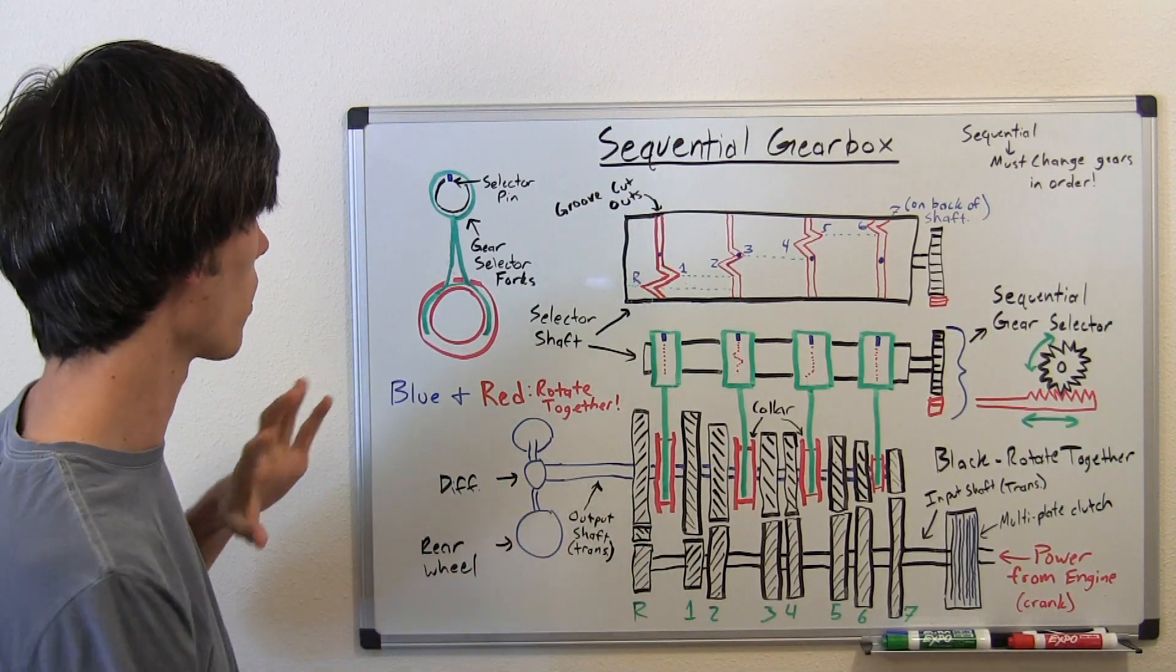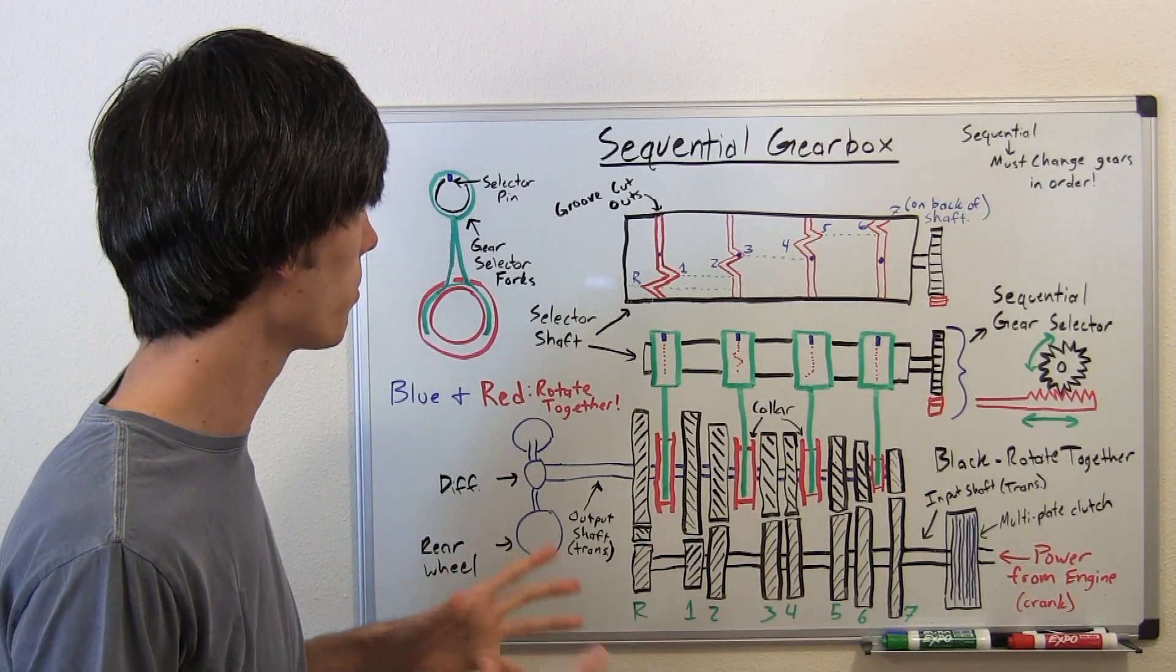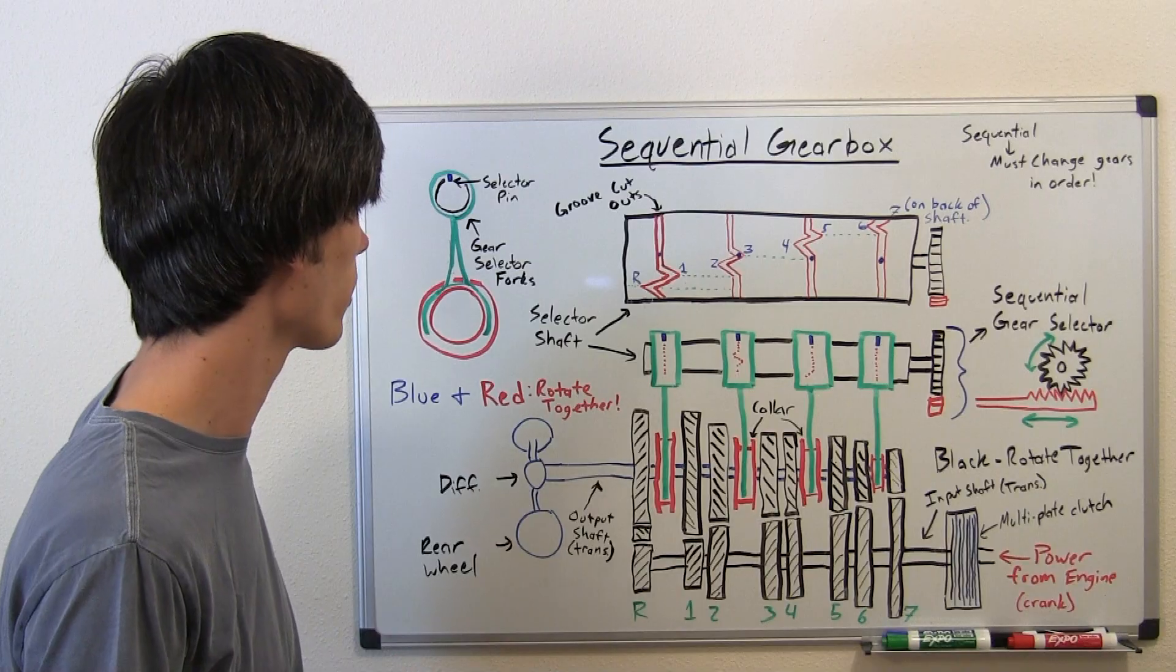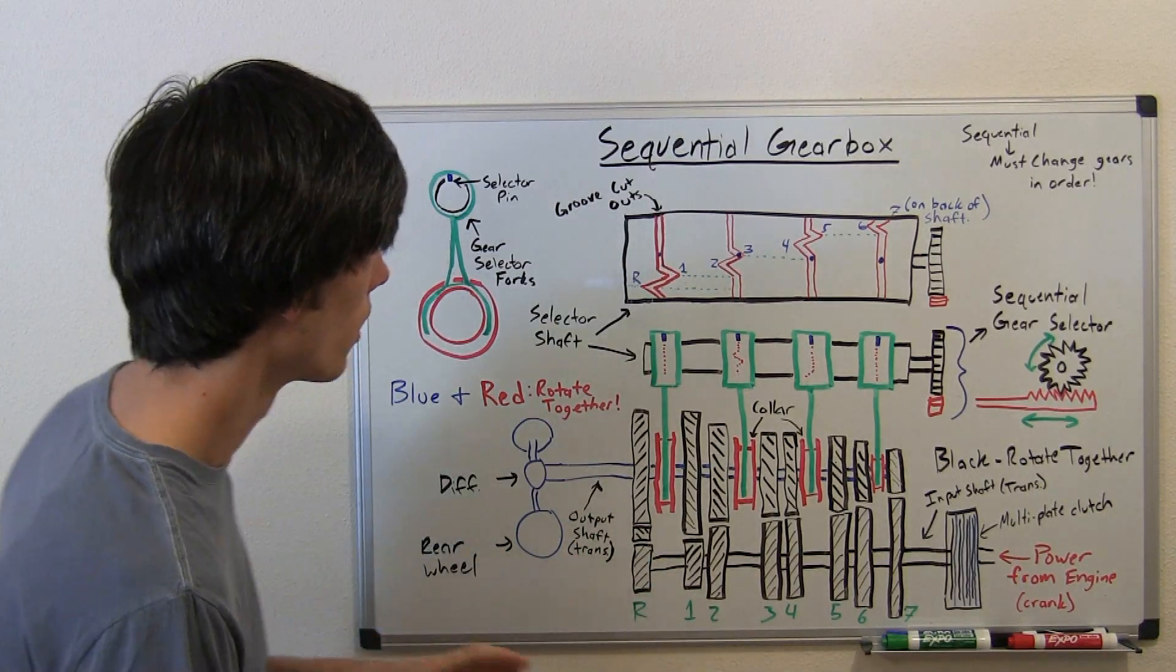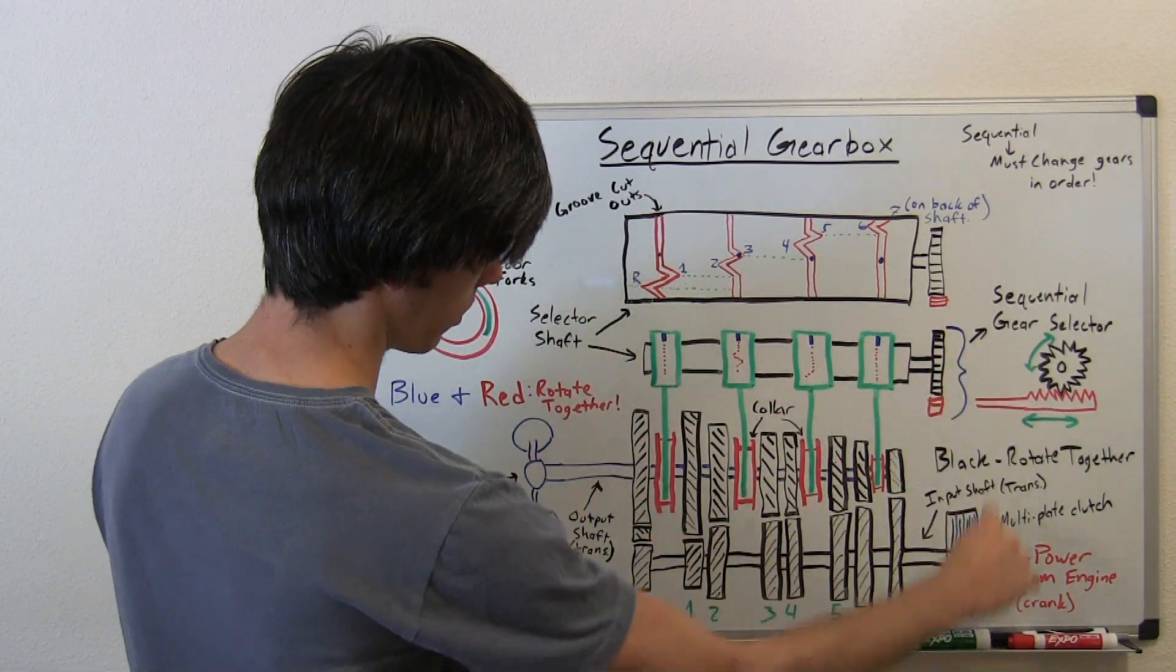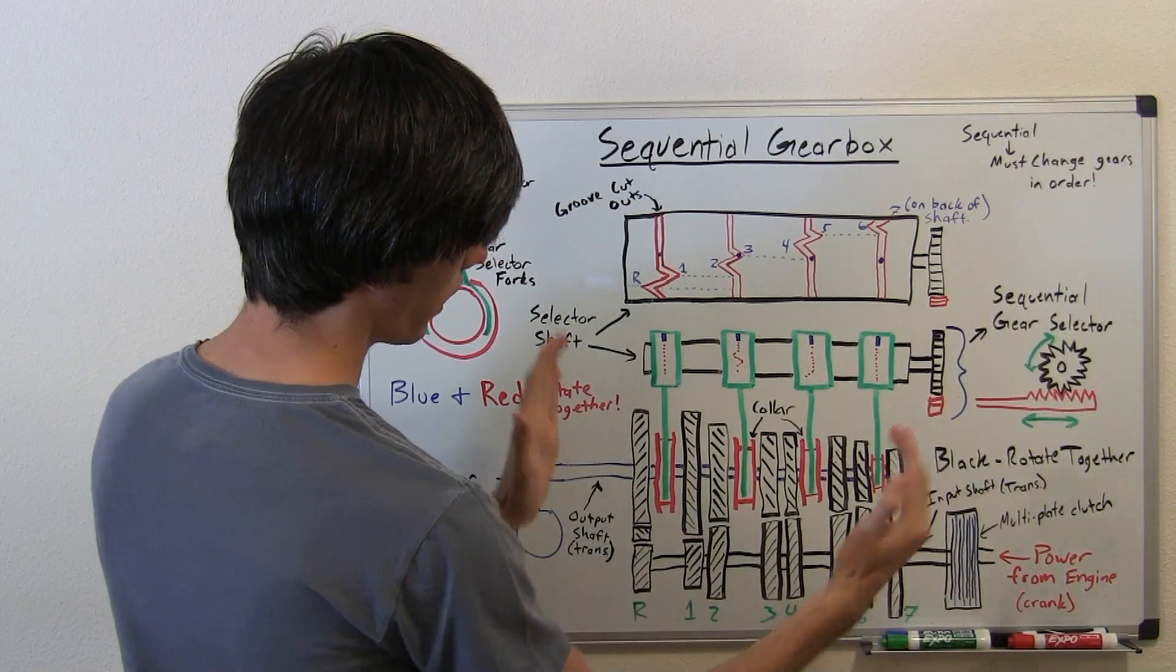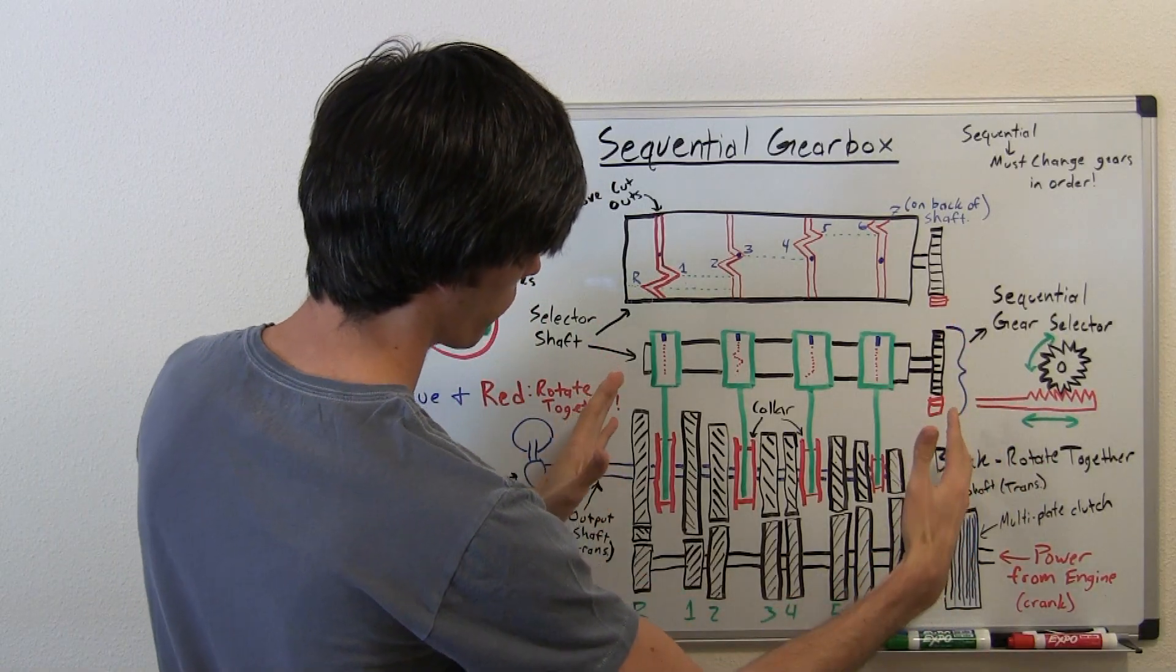Now if you notice, there's a lot going on on this board. They're pretty simple devices when you understand them, but there's a lot that's happening. But to start off, this right here, just think of this little rectangular area as the gearbox. This is the sequential gearbox. This is what we're trying to figure out here.